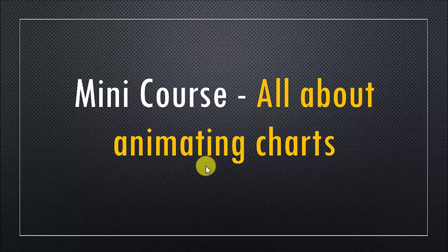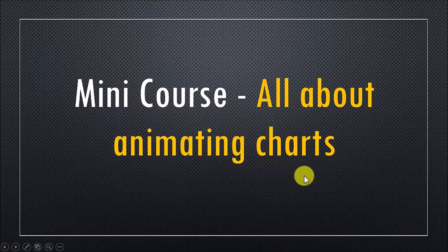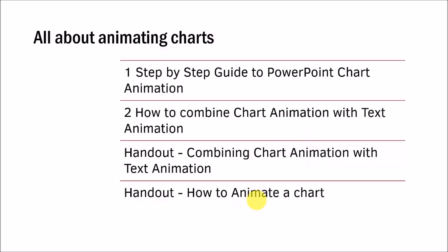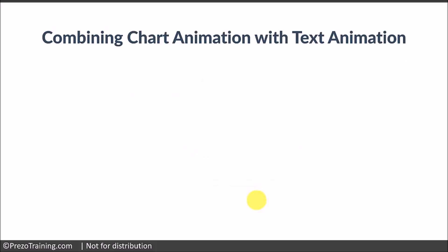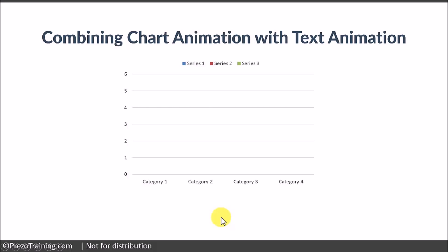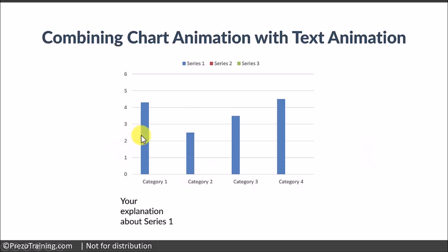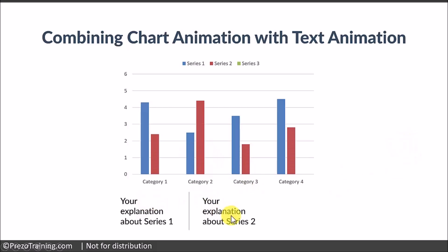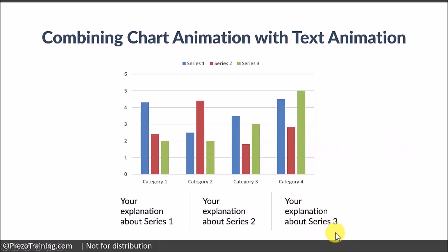Next we will deep dive into a mini course called All About Animating Charts. You will learn everything there is to know about animating your PowerPoint charts to tell a powerful data story that captivates your audience. For example, take a look at how we combine chart animation with text animation in this slide. On the first click, I show the two axes in the chart. Once I finish giving the context by explaining the two axes, on the next click I have the first data series displayed with its associated explanation — then the second series, then the third. The usual way of doing chart animation never gives you the option to combine chart animation with associated text animation like this.